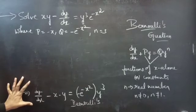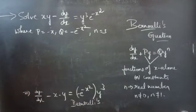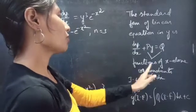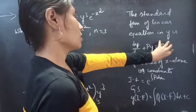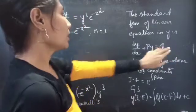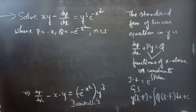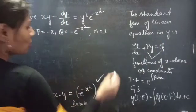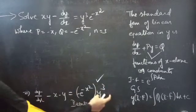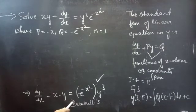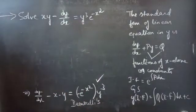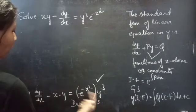We will reduce this Bernoulli's equation to linear form. The standard linear equation is dy/dx plus P·y equals Q, where p and q are functions of x alone or constants, with no function of y on the RHS. But in this Bernoulli's equation, we have y³ on the RHS. So we need to eliminate y³ from the RHS by bringing it to the LHS — that is, by multiplying both sides by 1/y³ or dividing by y³.